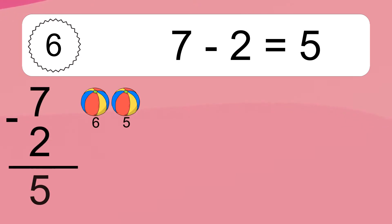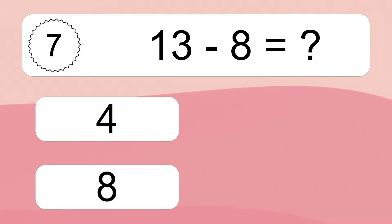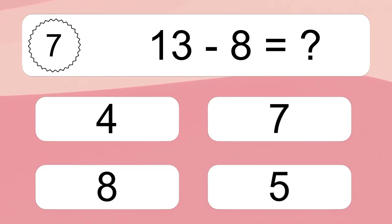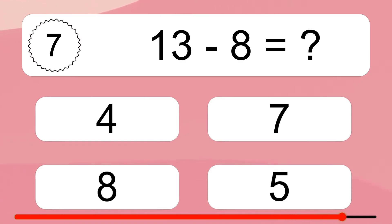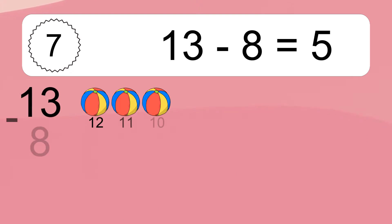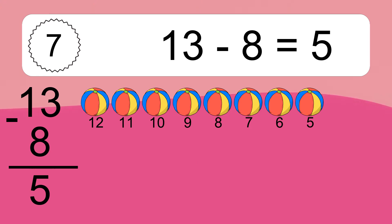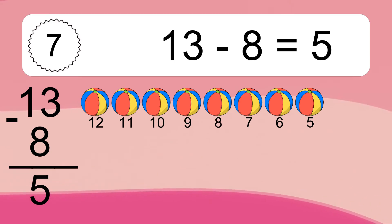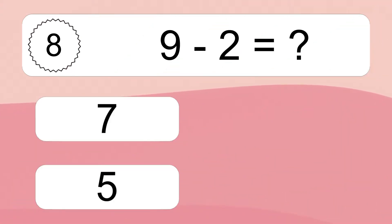7 minus 2 equals what? 7 minus 2 equals 5. Let's count it: 6, 5. 13 minus 8 equals what? 13 minus 8 equals 5. Let's count it: 12, 11, 10, 9, 8, 7, 6, 5.